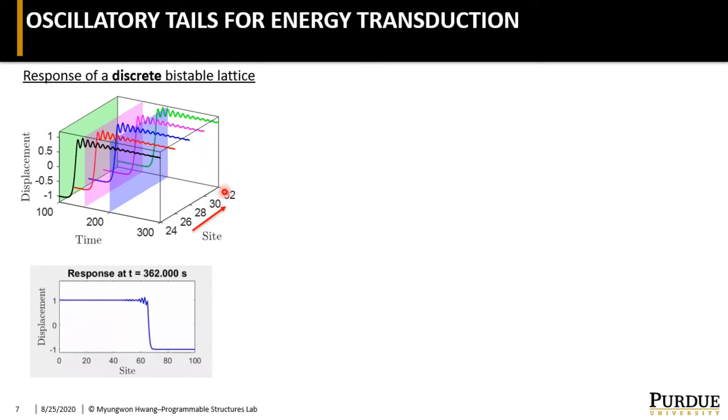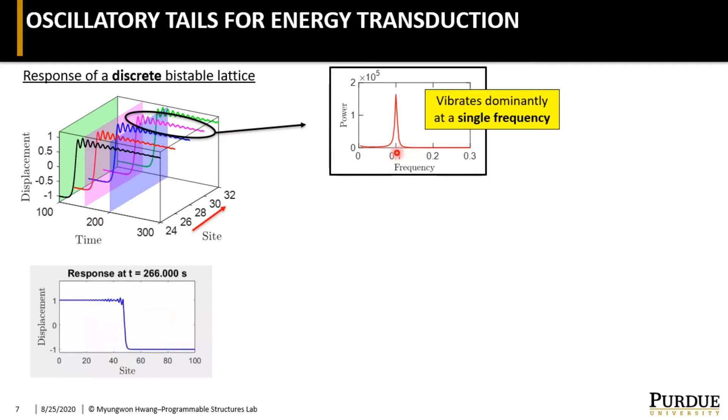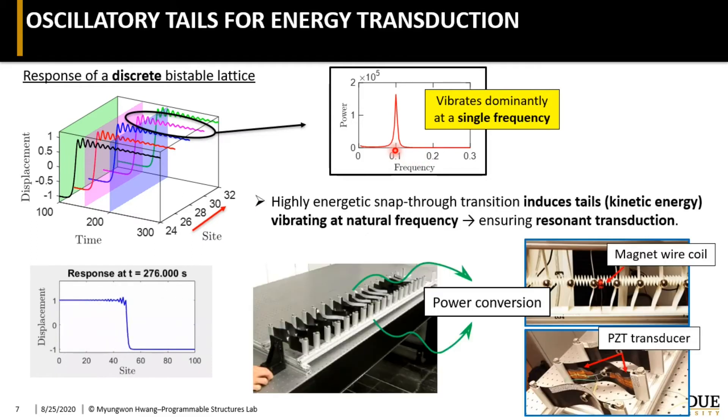Here is the typical time response of discrete bistable lattice. We notice that there is an emission of a small amplitude vibration trailing the main transition wave. Looking at the frequency content of this tail portion, we can see that the tail vibrates dominantly at a single frequency. This monochromatic vibrational energy can then be converted to electric energy, for example, using electromagnetic or piezoelectric conversion, and we can efficiently harvest such energy through impedance matching. So combined with the input-independent dynamics, it provides a very robust mechanism for broadband energy harvesting.